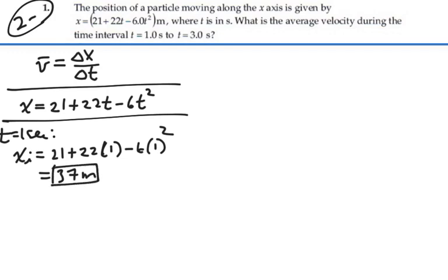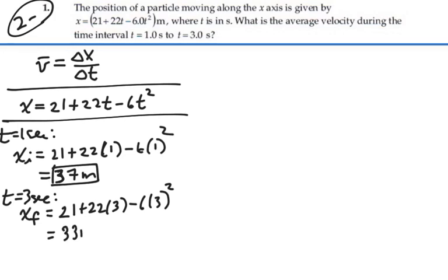So that will be our initial position, 37 meters. At t equal to 3 seconds, we'll have our final position. And that will be equal to 21 plus 22 times 3 minus 6 times 3 squared, which would be 21 plus 66, which would be 87 minus 54, which would be 33 meters.